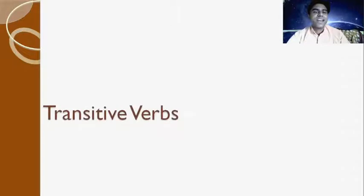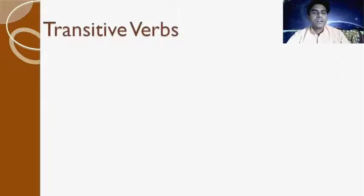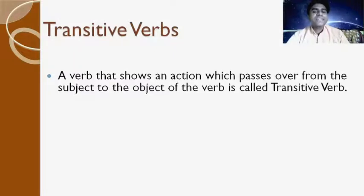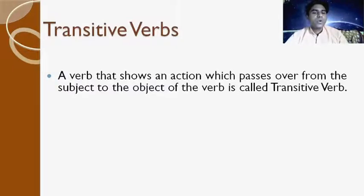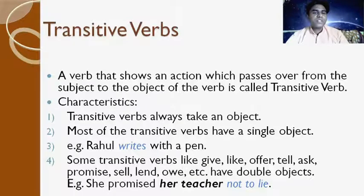Next, transitive and intransitive verbs. A transitive verb shows an action which passes over from the subject to the object. In other words, verbs that show action starting from the subject and reaching to the object are called transitive verbs. Characteristics: transitive verbs always take an object.